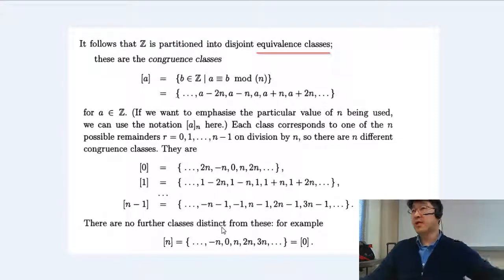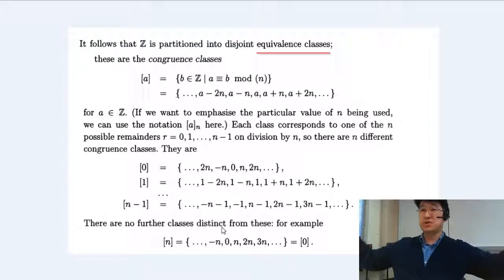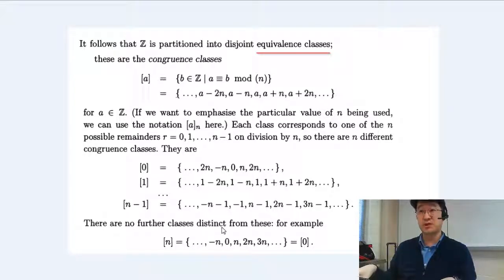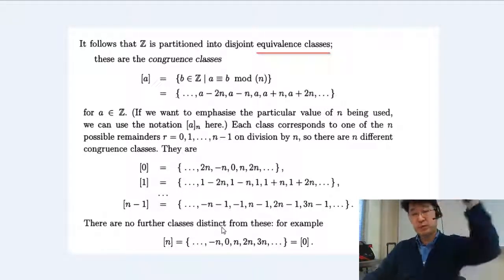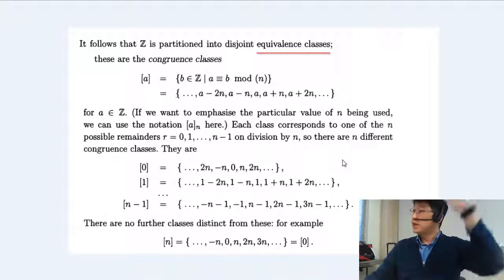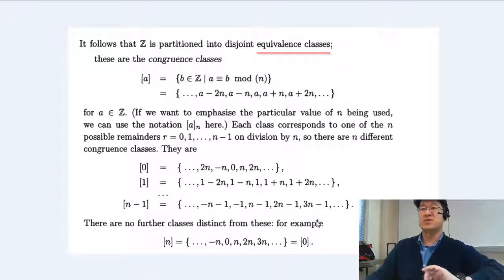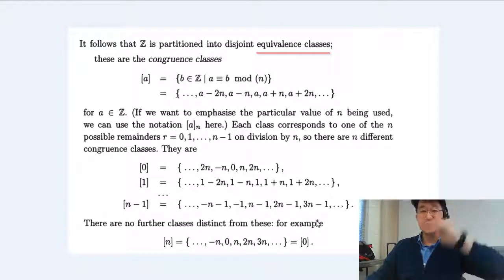When that happens, what do you call that? There's a p-word that describes it. The entire set of integers is separated into different subsets with no intersection — that's a partition. So an equivalence relation gives you equivalence classes, and it produces a partition of a given set.